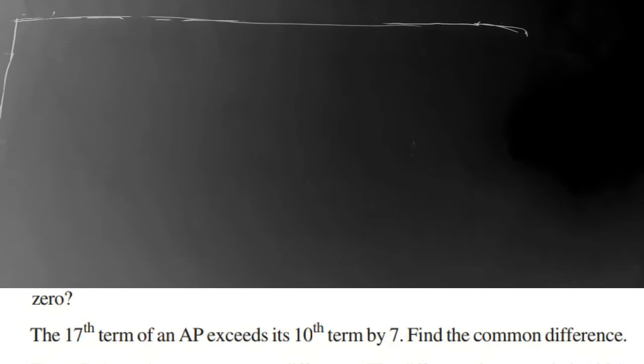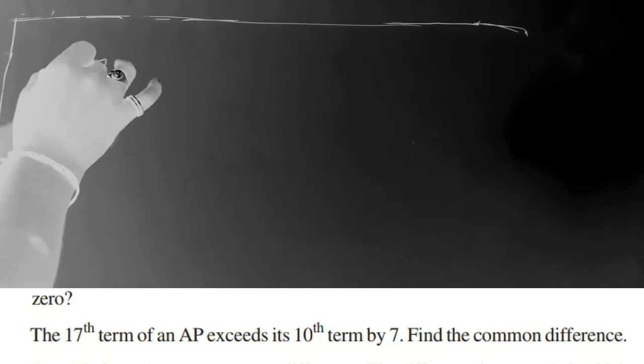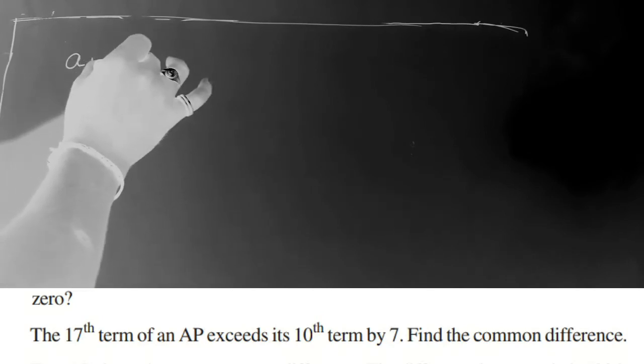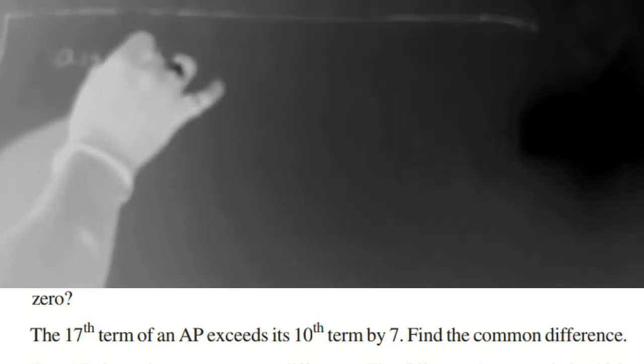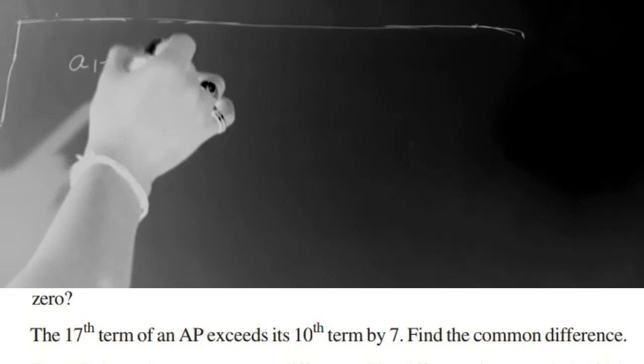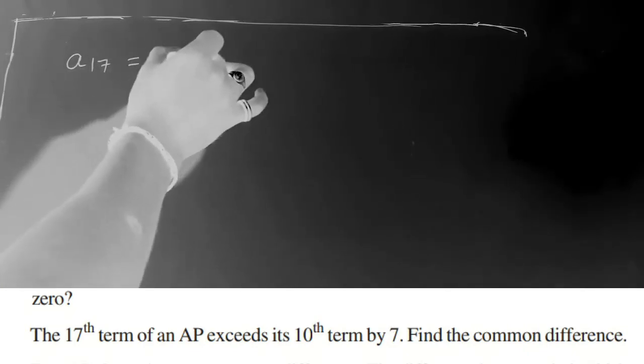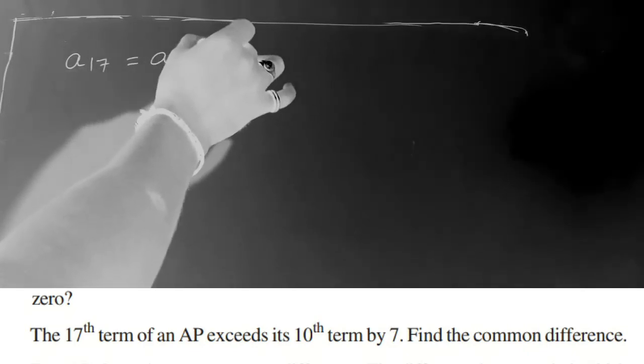So here is the question. It is saying that the 17th term, a17, exceeds its 10th term by 7. So he is asking to find the common difference. The question is simple: a17 exceeds its 10th term a10 by 7. Find the common difference.